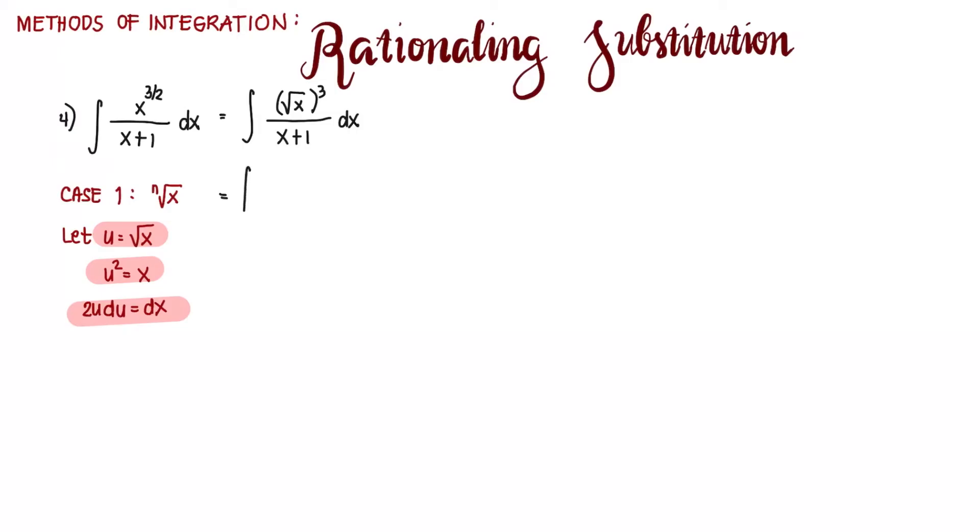We substitute to our given: square root of x is u, so that's u cubed. x is u squared plus 1, and dx is 2u du.